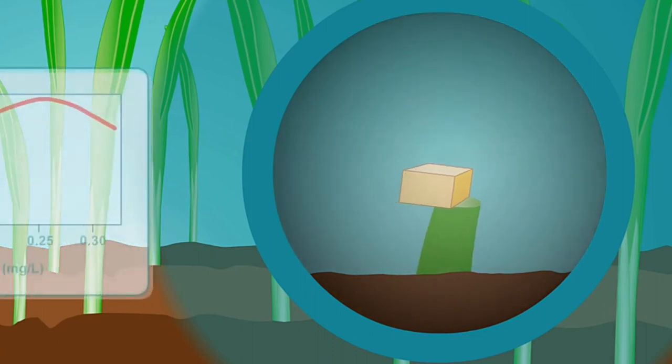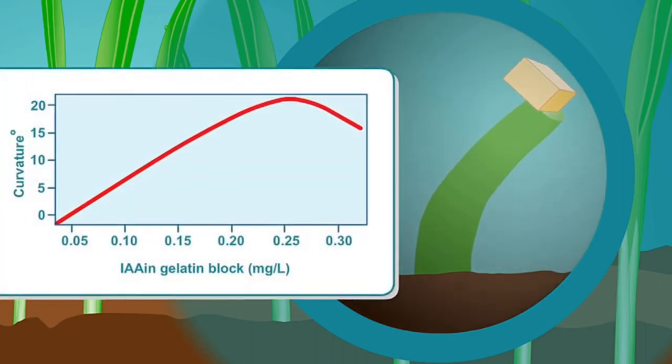Hormone that the agar had absorbed traveled down the side of the shoot, causing a response. The amount of bending is proportional to the amount of hormone in the agar.